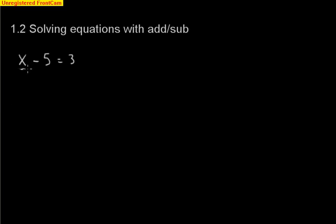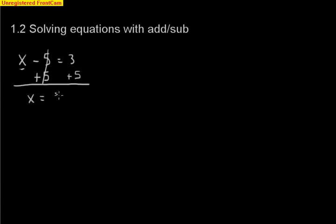In section 1.2, we talked about solving equations with either addition or subtraction — all just one-step equations. For example, x minus 5 is equal to 3. We want to solve for x. We can figure out that the answer is 8, but for the work shown, we use inverse operations. To get x by itself, we add 5 — the inverse of subtracting 5. Adding 5 to both sides, the negative 5 and positive 5 cancel out, leaving x equals 8.